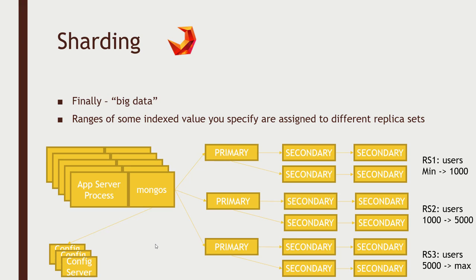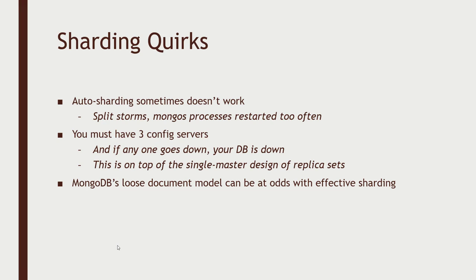Sharding itself has some quirks in MongoDB. Auto-sharding, where it tries to rebalance over time, sometimes fails. There is a rather nasty failure mode called a split storm, where it simply cannot split things quickly enough and keeps trying to re-split over and over again, bringing your entire cluster down. Another failure mode is if your MongoS processes on the front end get restarted too often — things will never rebalance, because MongoS tracks data distribution over time and restarting it resets that count. It's very easy to get into a bad state, so someone needs to be keeping a close eye on things administratively.